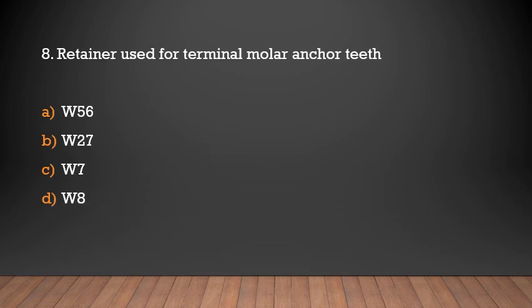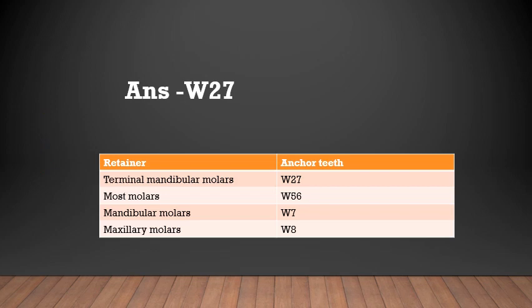Retainer used for terminal molar anchor sheet: W56, W27, W7, or W8. The answer is W27. Retainers used for terminal mandibular molar is W27. Most molars use W56 retainers. Mandibular molar use W7 retainer and maxillary molars use W8 retainers.